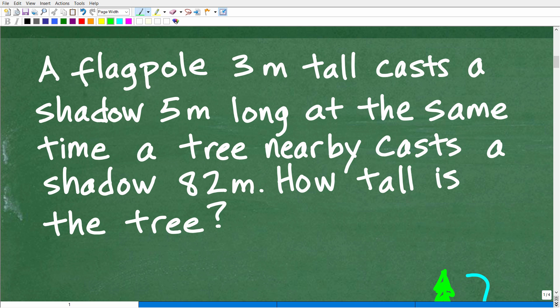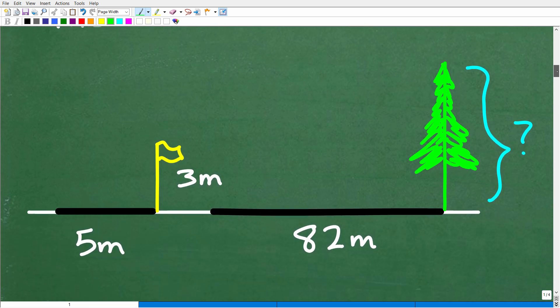Once you understand the problem, what you want to do is model or visualize the problem if possible. This particular problem, we can come up with a nice, lovely sketch of what's going on. What we're going to have to do here is make some assumptions. We're going to have to simplify this problem. So let's go ahead and just come up with a quick sketch to see what's going on.